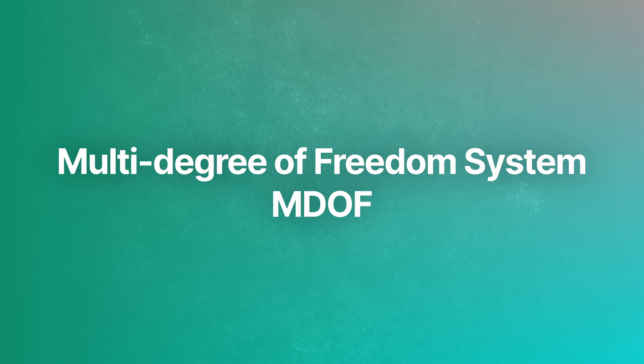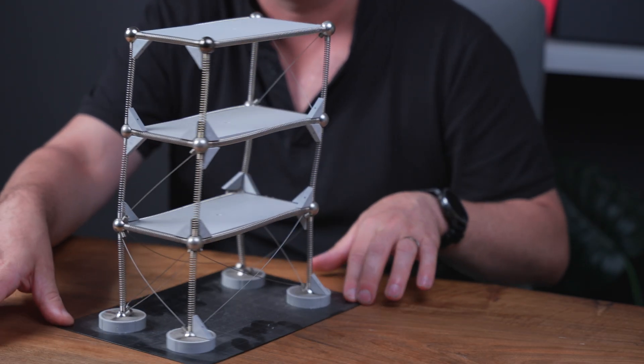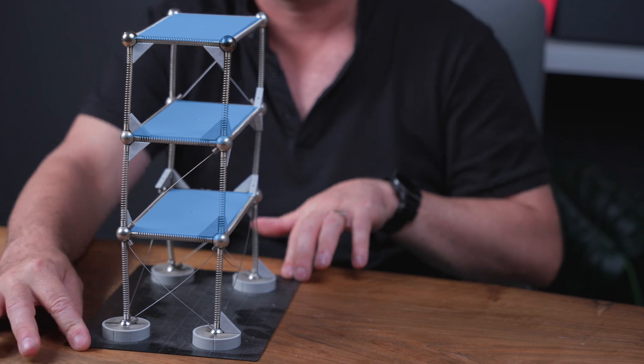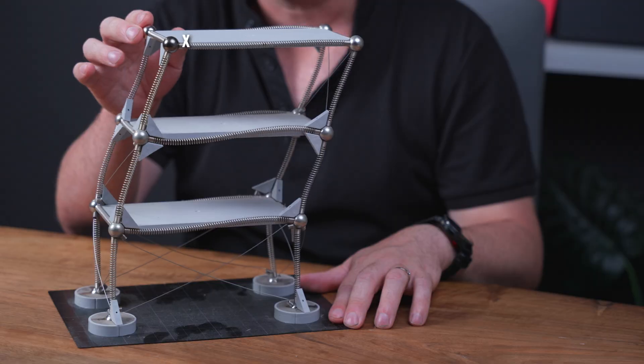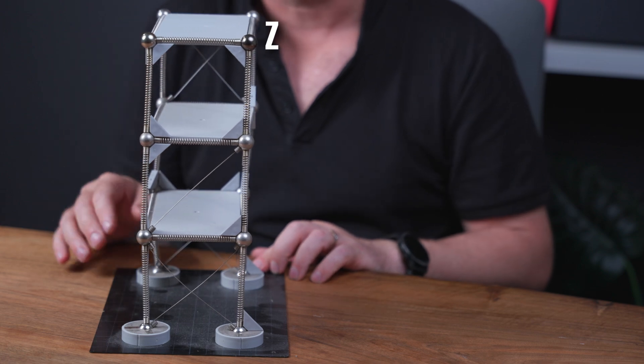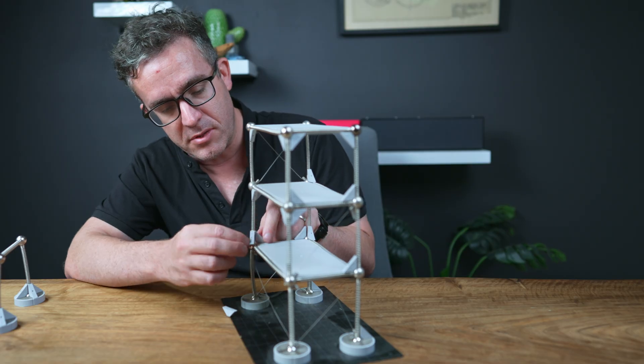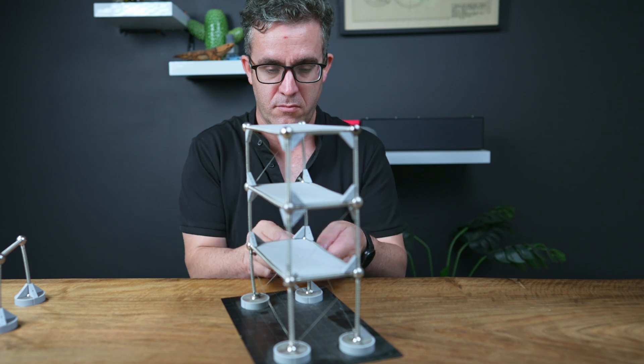When we jump up to a more complex system, when we're going to the multi-degree of freedom system, as you can see here, we have depth through our structure and width through our structure. So it means the structure can move both in the X and Z directions as we push it through this building.